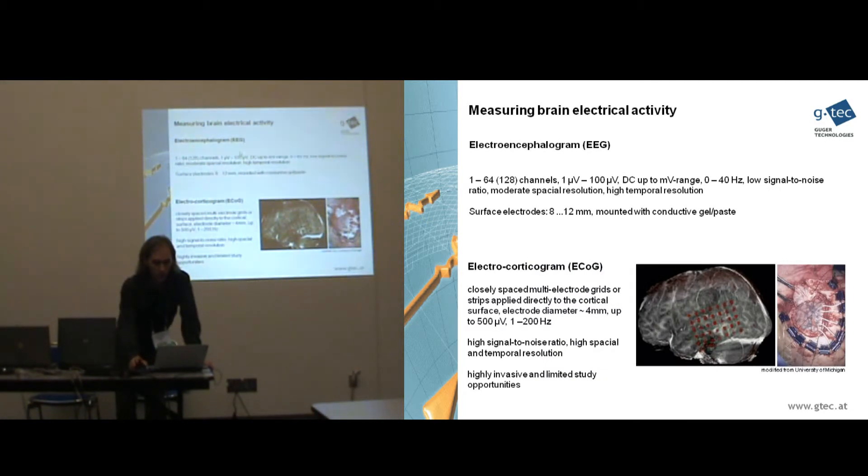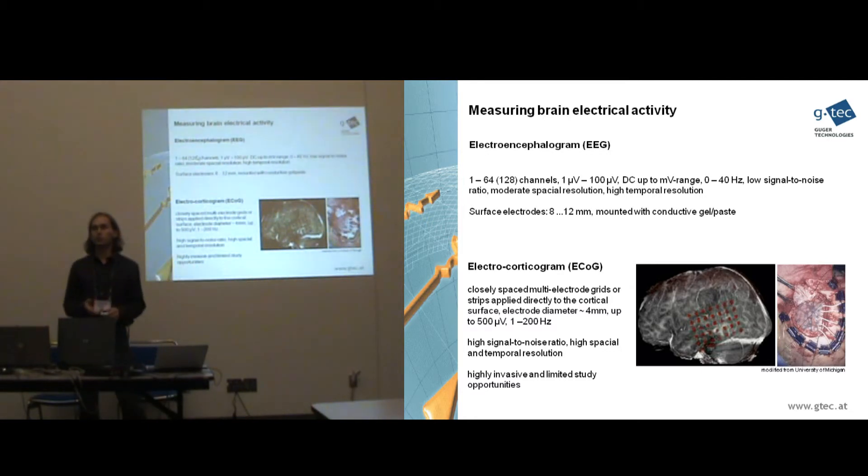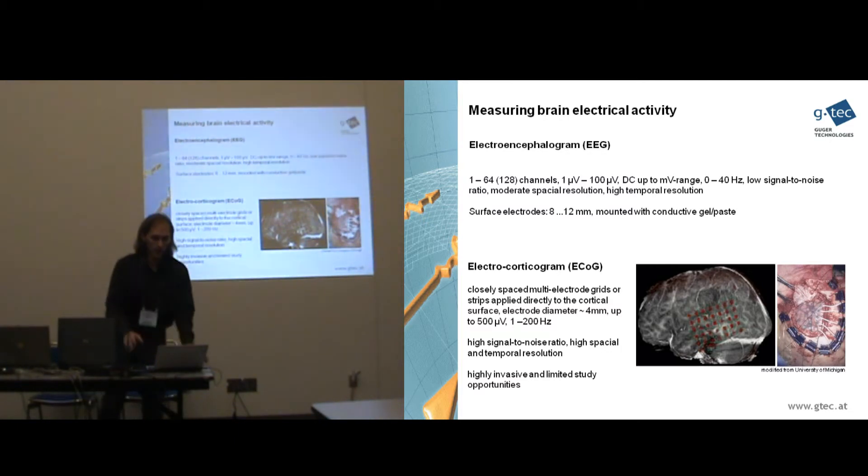So if we compare shortly EEG recordings with ECoG recordings. So if you record EEG, you use normally between 1 and 64 channels or sometimes up to 128 channels. The signal amplitudes are normally around 50 to 60 microvolts. And the frequency ranges from DC up to 40 Hz or less. The biggest disadvantage is the low signal to noise ratio. But it gives you a very high temporal resolution. That's a big advantage of EEG.